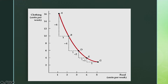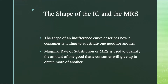At point B, there are 10 units of clothing and 2 units of food. At point D, there are 6 units of clothing and 3 units of food. At point E, there are 4 units of clothing and 4 units of food. At point G, there are 3 units of clothing and 5 units of food. The shape of an indifference curve describes how a consumer is willing to substitute one good for another.